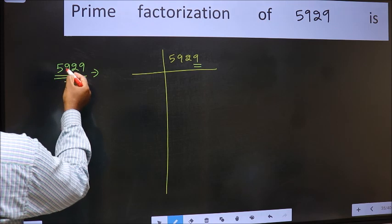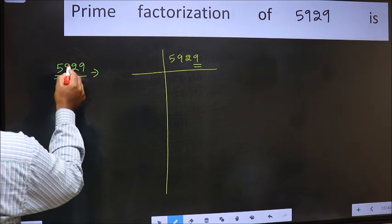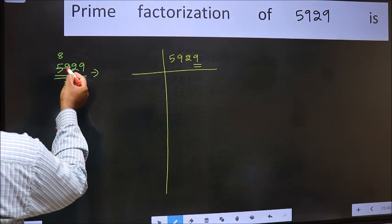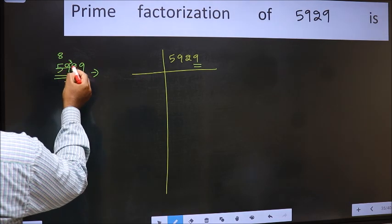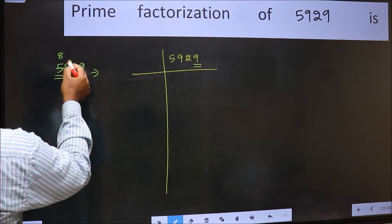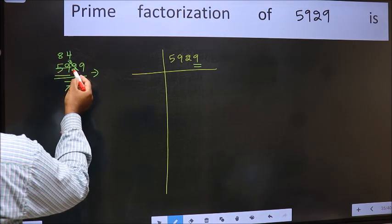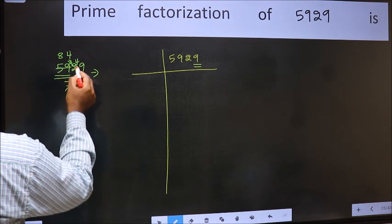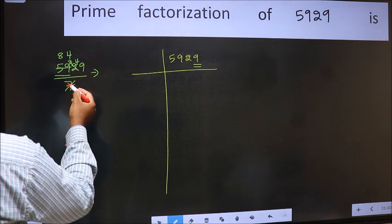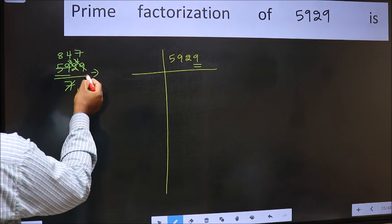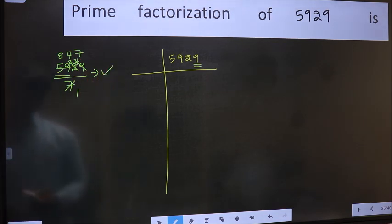Our number close to 59 in 7 table is 7 times 8, 56. 59 minus 56 is 3. 3 carried forward, 32. Our number close to 32 in 7 table is 7 times 4, 28. 32 minus 28 is 4. 4 carried forward, 49. When do we get 49 in 7 table? 7 times 7 is 49. No number has been left out, so this is divisible by 7.